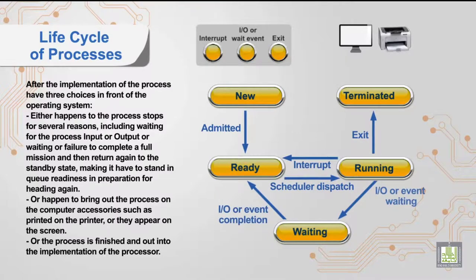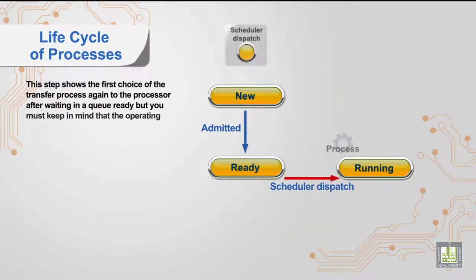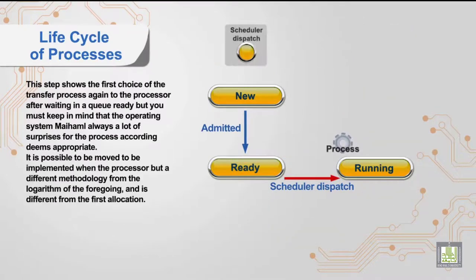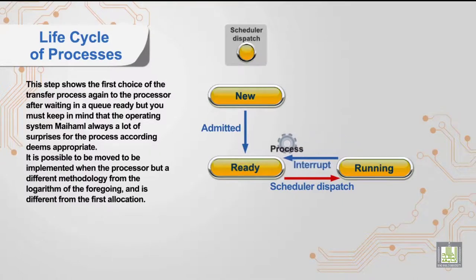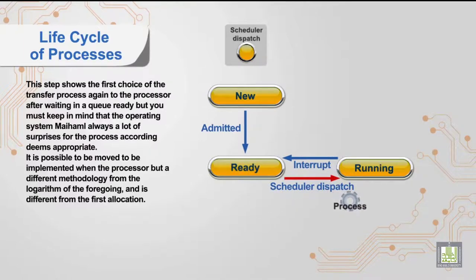This step shows the first choice: transferring the process back to the processor after waiting in the ready queue. Keep in mind that the operating system always has many decisions for the process according to what it deems appropriate. It is possible to be moved for implementation with the processor using a different methodology or scheduling algorithm from the first allocation.